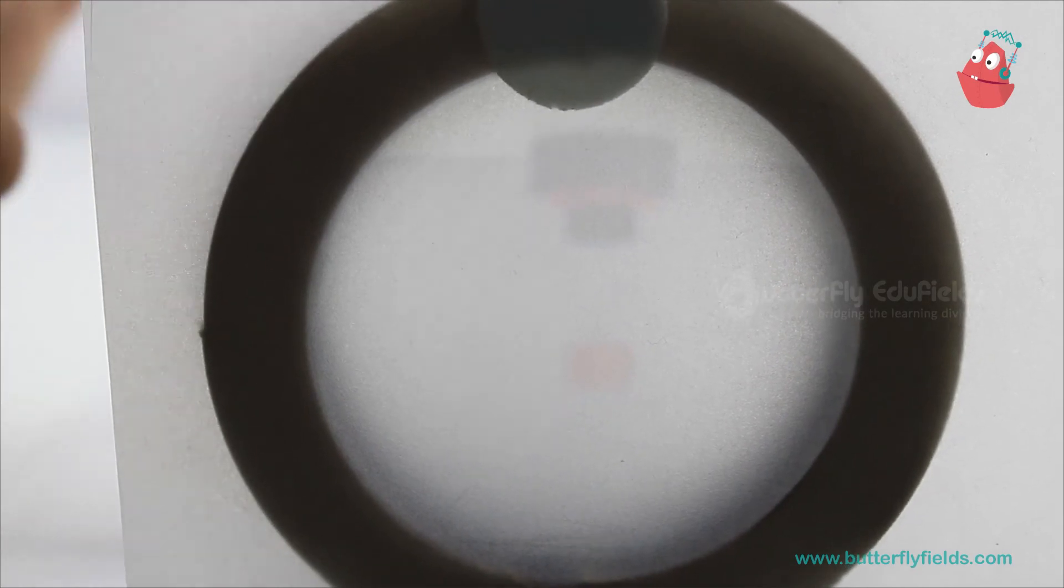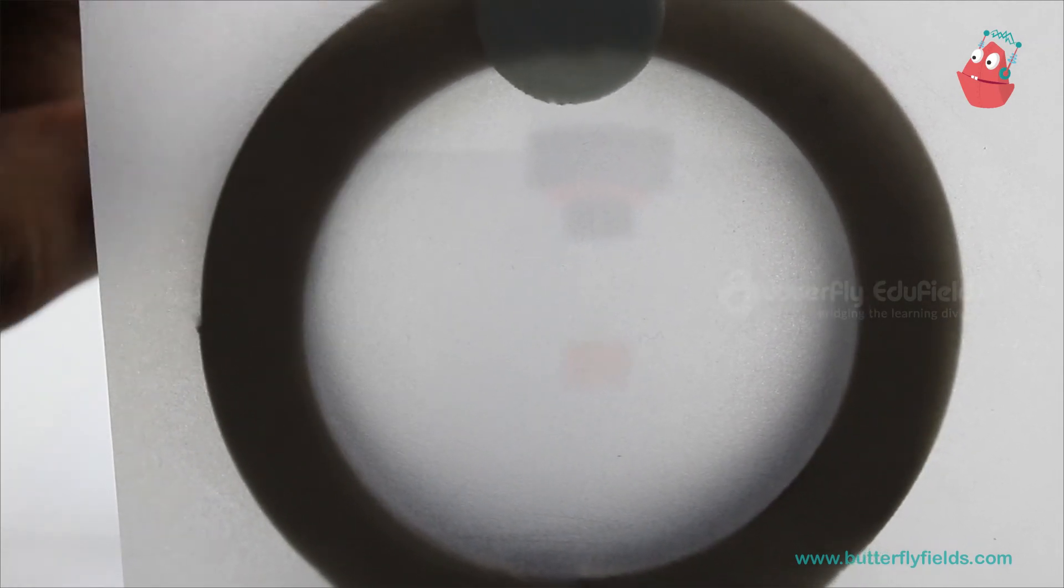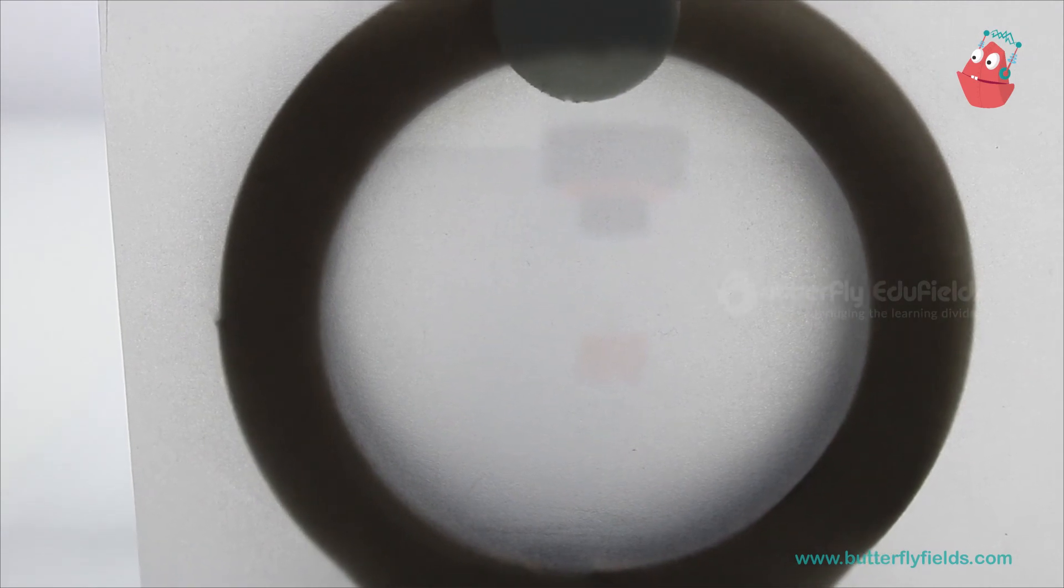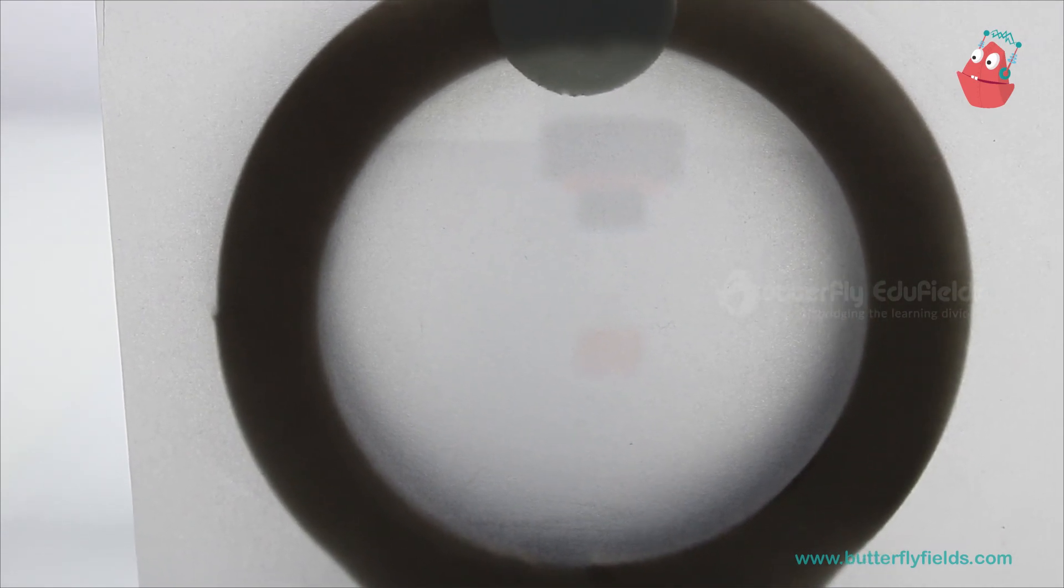So now the retina has an inverted image which again the brain converts into straight, and we are able to see things.